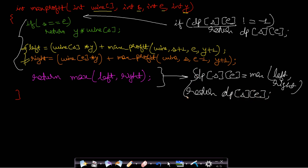By doing this, we first check whether the DP solution is already calculated — if so, return it immediately. Otherwise, we compute and store the maximum value in the DP table so that the next time the same subproblem is needed, it is returned from the first check. This is the entire DP code, converted from backtracking. If you understood backtracking, this is a straightforward extension.